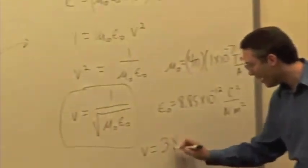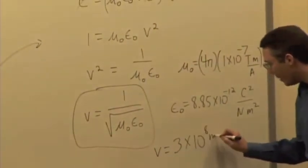What do you get? You get the speed of light—3 times 10 to the eighth meters per second.